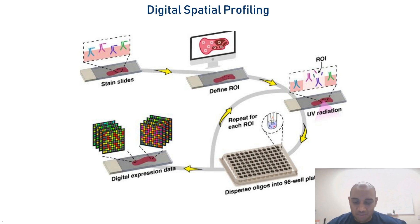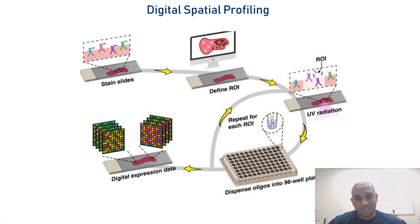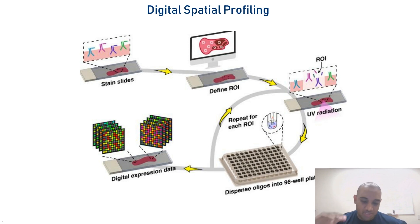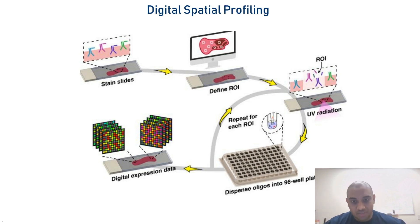Recent data presented at AACR showed that you could do protein and RNA off a single tissue section, which is really exciting. Traditionally we'd go through serial sections to do protein, but being able to do it off the same tissue section is really powerful.